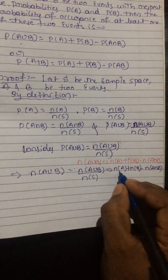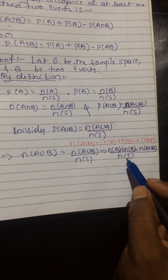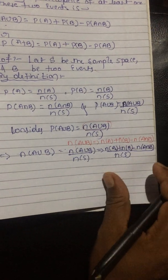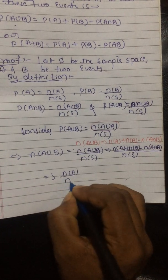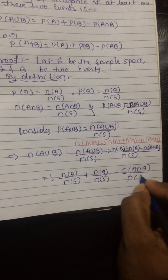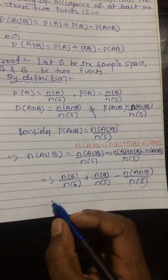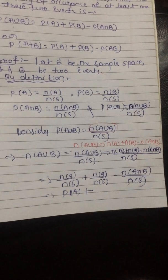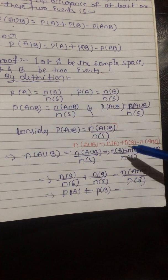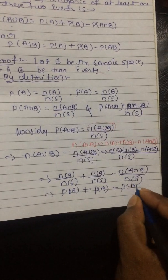Splitting the fraction: N(A)/N(S) + N(B)/N(S) - N(A∩B)/N(S). We know that N(A)/N(S) = P(A), N(B)/N(S) = P(B), and N(A∩B)/N(S) = P(A∩B). Therefore, P(A∪B) = P(A) + P(B) - P(A∩B). This completes the proof.